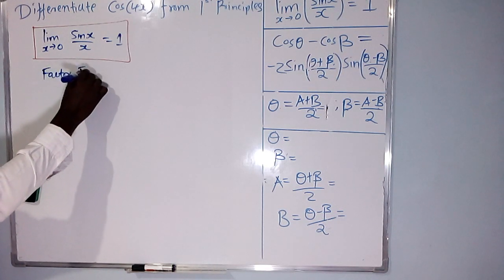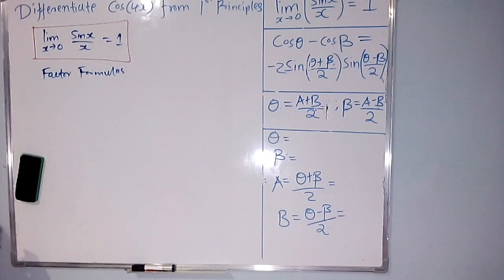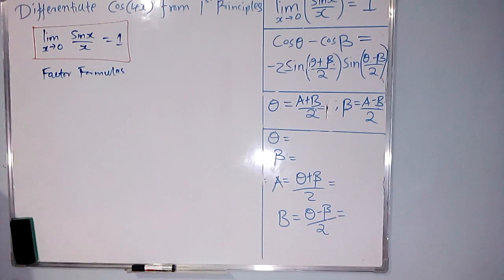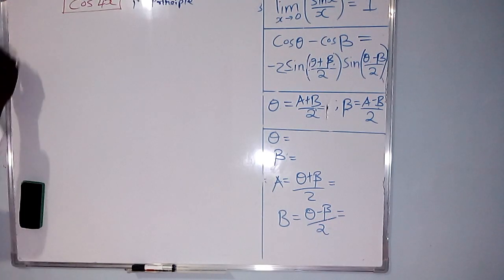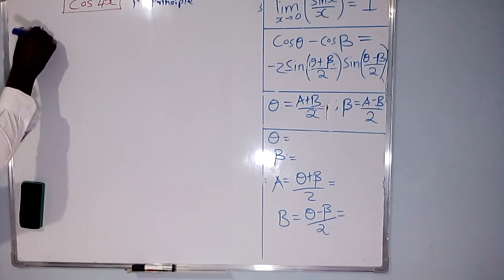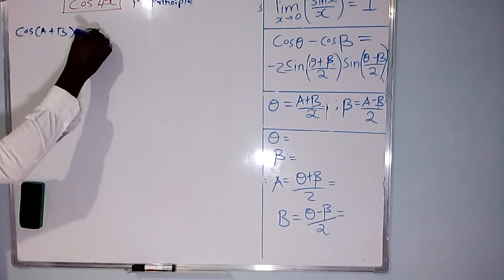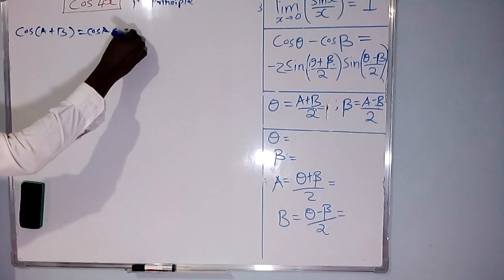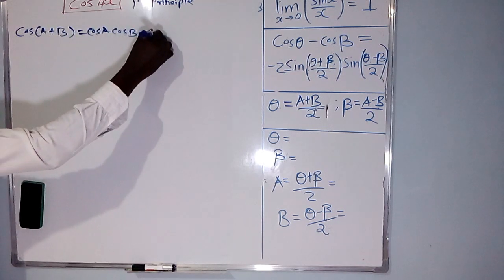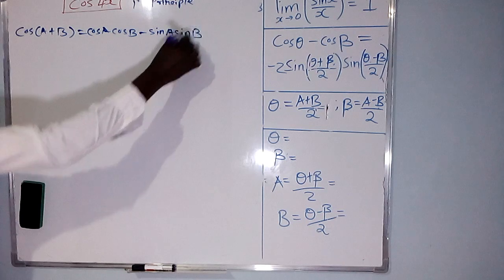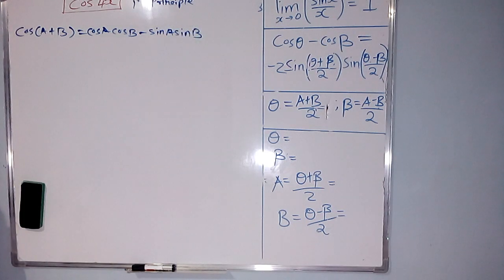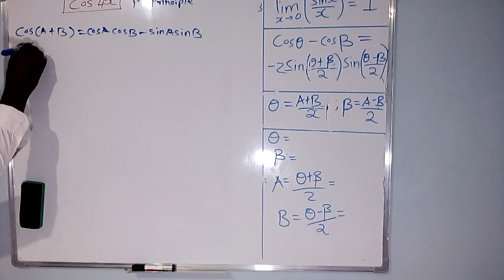The next thing you need to know is what we call the factor formula with change of variables. So cos(A+B) — this is the cosine sum angle formula — and then we get the cosine difference angle formula, cos(A-B).